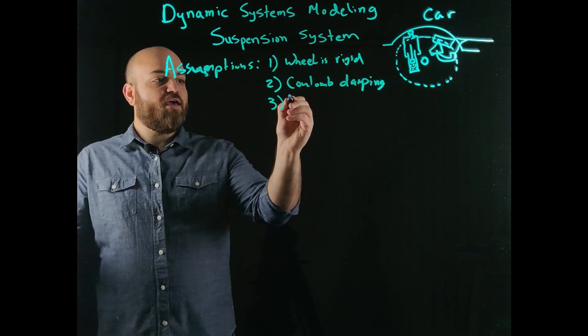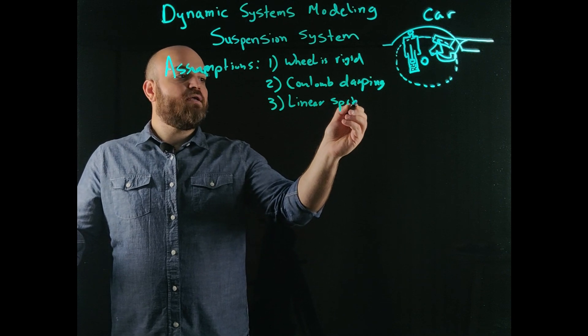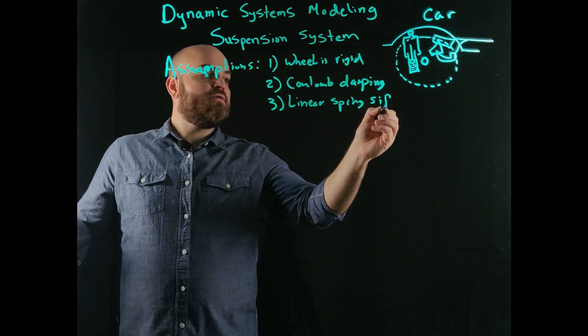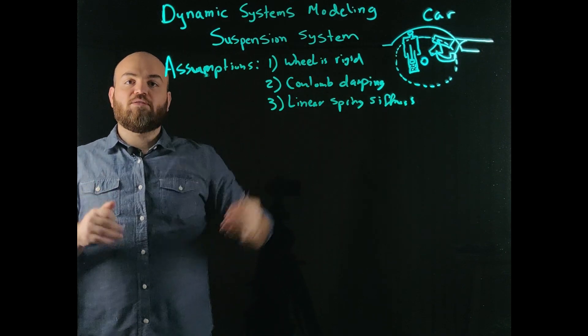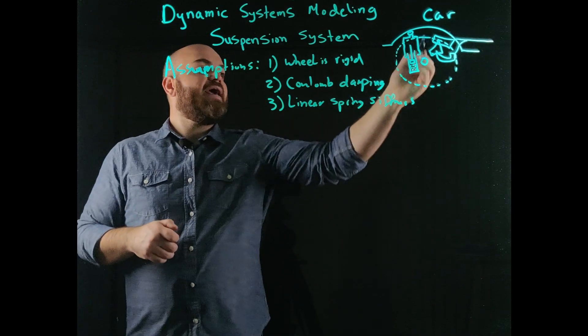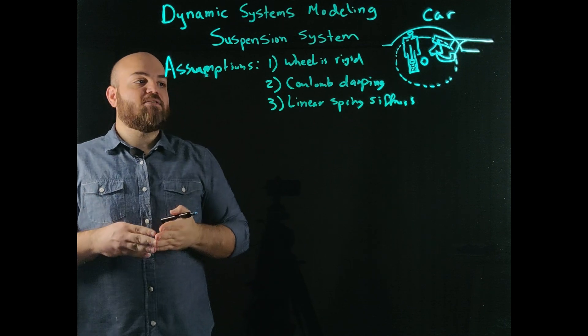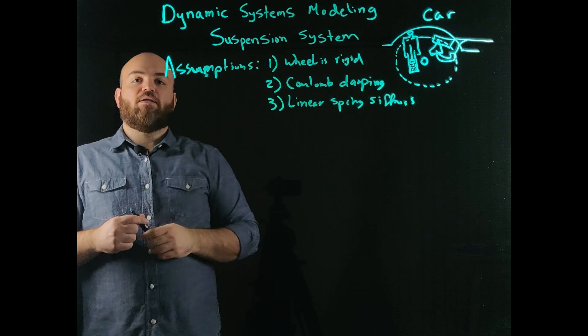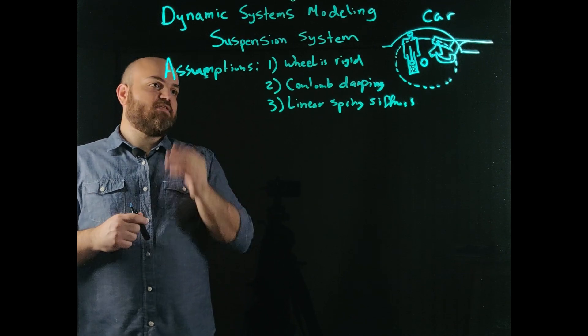And three, I have a linear spring stiffness. That means the amount of force applied to this mechanical spring or mechanical system that provides rigidity is linear with the force applied. So the slope of that line would be the stiffness of the system. Okay.